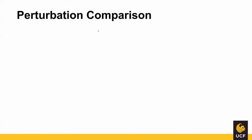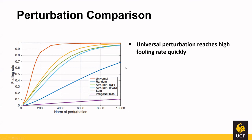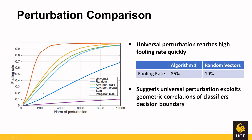To understand the characteristics of universal perturbations, they compared it to different types of perturbations using a graph showing each perturbation's fooling rate on the ImageNet validation set versus its L2 norm. The universal perturbation reaches a high fooling rate quickly. Even constrained to a norm of 2000, the fooling rate is 85%, while random vectors achieve only 10%. This large difference suggests a geometric correlation in the decision boundaries.